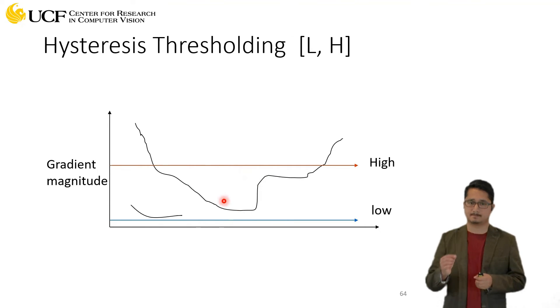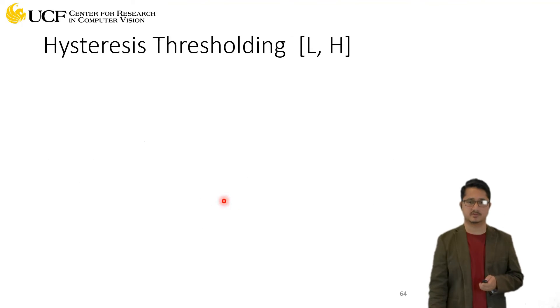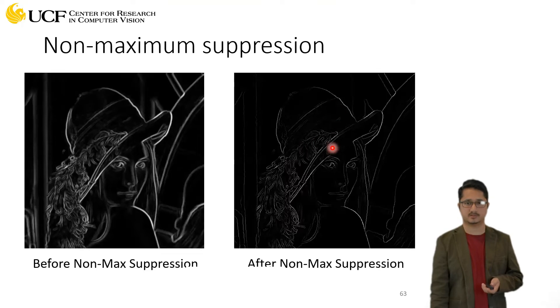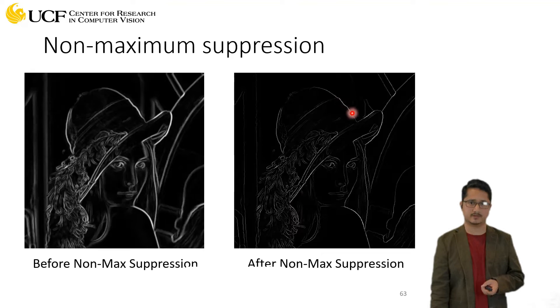When you visualize edges in this image, you can see there is some kind of connectedness in these neighboring pixels when we're forming an edge. For example, this edge over here is continuous.